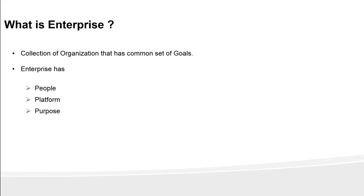People could be organized as a company, business division, or project team. Purpose could be to run a business which could be a government organization, NGO, or private establishment, and the supporting platform could be a building, infrastructure, equipment, and technologies. A point to note is an enterprise is not always a company — it can be a business unit, a business division within a company, or a project being executed in a company.